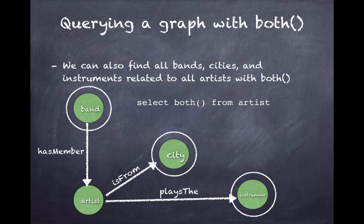If we wanted to select BOTH from artist, we'll select all of the vertices that are reached from an artist. By putting a specific artist in a WHERE clause, we can find out that artist's band, their city, and which instruments they play.